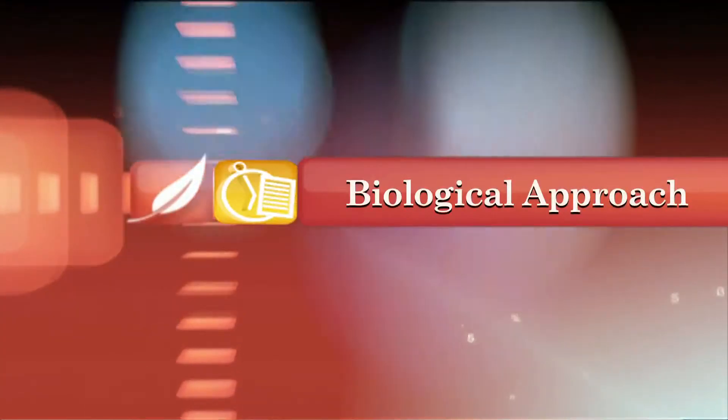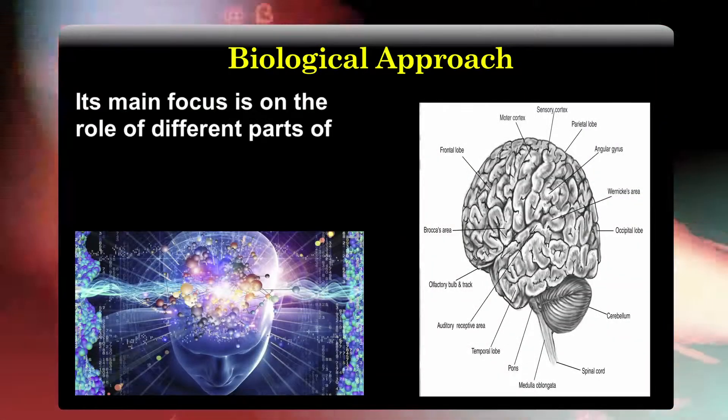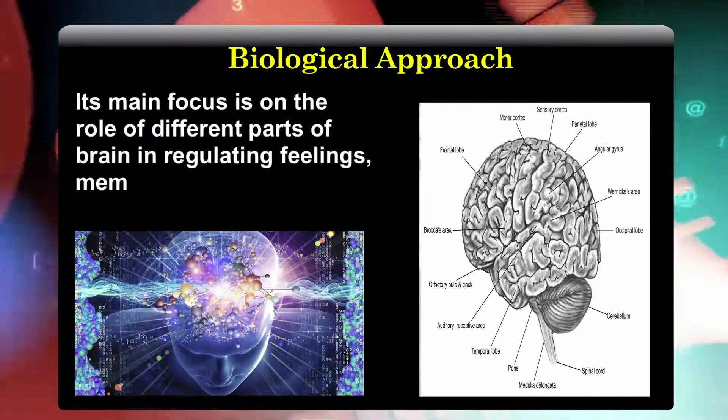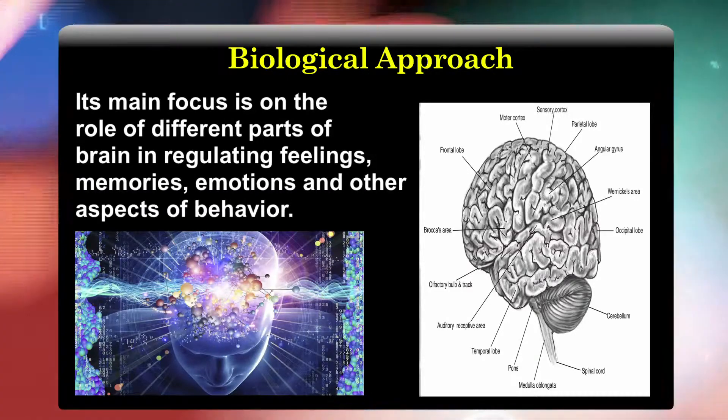Its approaches are: first, the biological approach. This approach focuses on biological structures and phenomena such as brain, genes, hormones, endocrine system and neurotransmitters in order to understand the dynamics of behavior. Its main focus is on the role of different parts of the brain in regulating feelings, memories, emotions and other aspects of behavior.